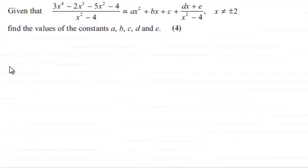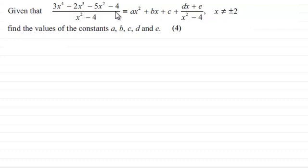Hi there. Now for this question we're given that 3x to the power 4 minus 2x cubed minus 5x squared minus 4, all divided by x squared minus 4, is identical to ax squared plus bx plus c plus dx plus e all divided by x squared minus 4, where x is not equal to plus or minus 2. And we've got to find the values of the constants a, b, c, d, and e for 4 marks.